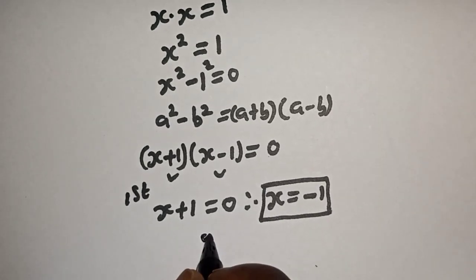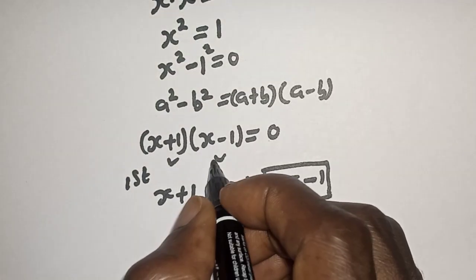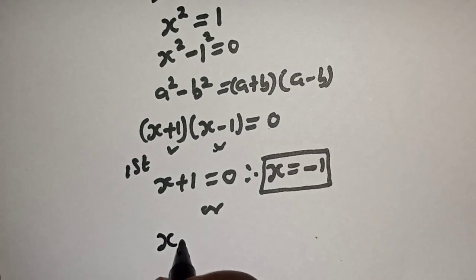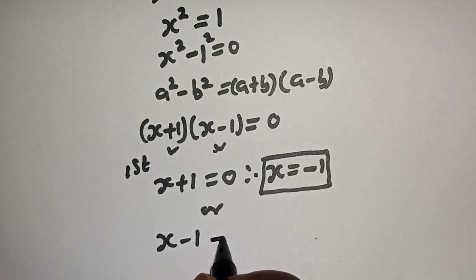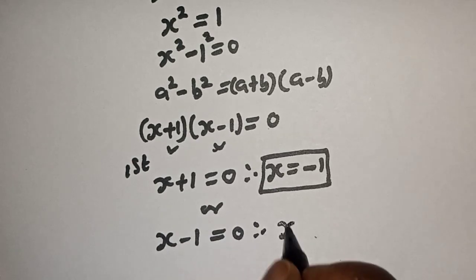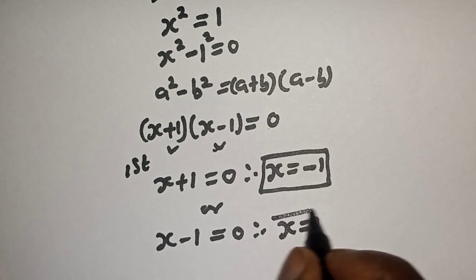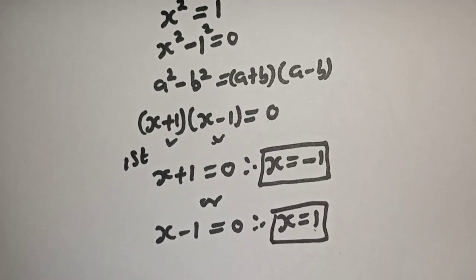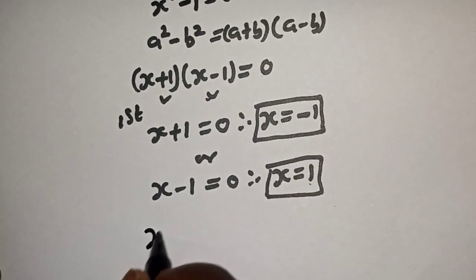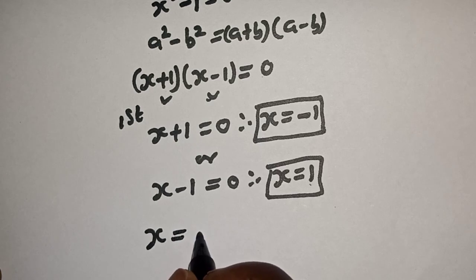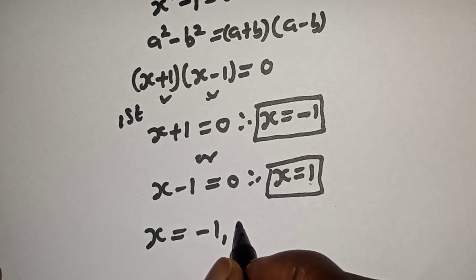Or from here, s minus one is equal to zero, therefore s is equal to one. And our final answer is s is equal to minus one comma one.